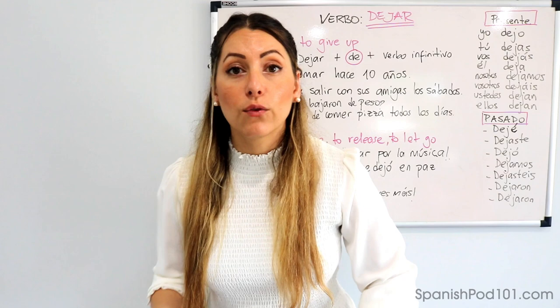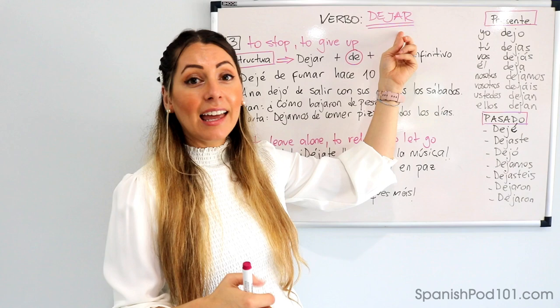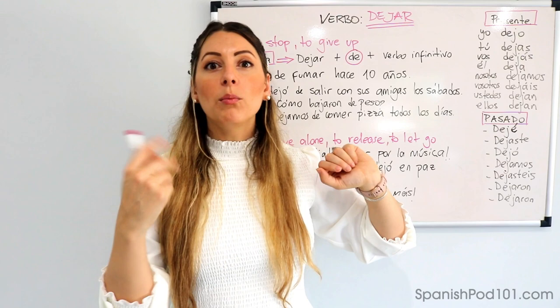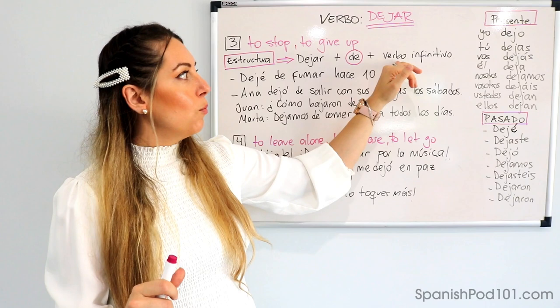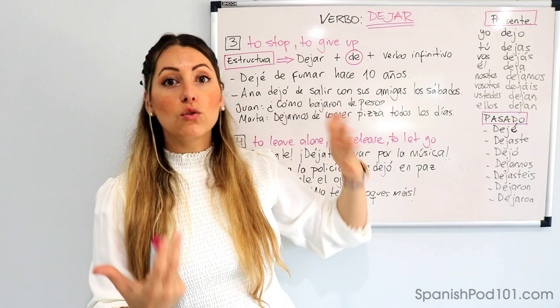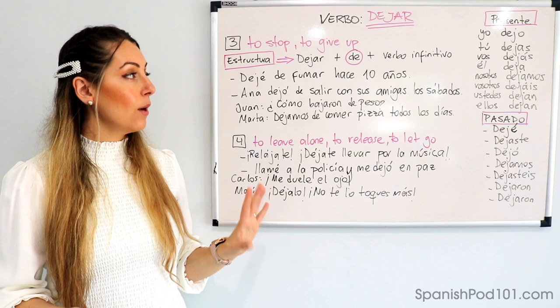¿Qué significa verbo en infinitivo? El verbo en infinitivo es un verbo que no está conjugado. In Spanish we have three forms: verbs ending in -ar like hablar, trabajar, dejar; verbs ending in -er like comer, leer, beber; and verbs ending in -ir like vivir, escribir. El verbo dejar is the one that gets conjugated — the second verb stays in the infinitive. Conjugamos el verbo dejar más de y luego ponemos el otro verbo.